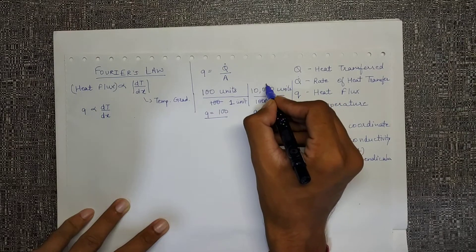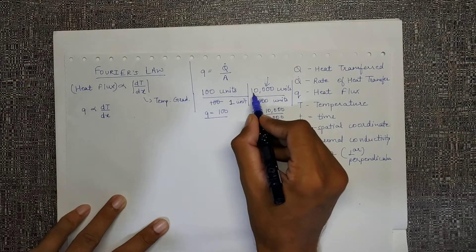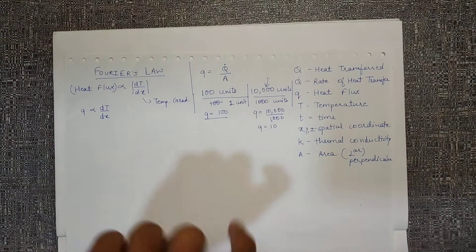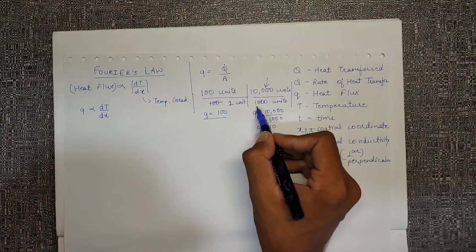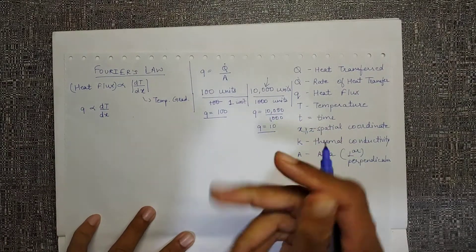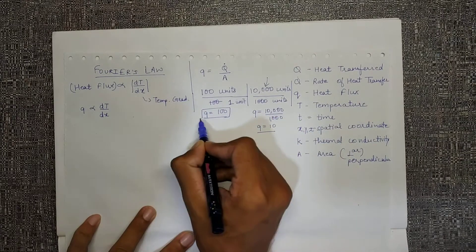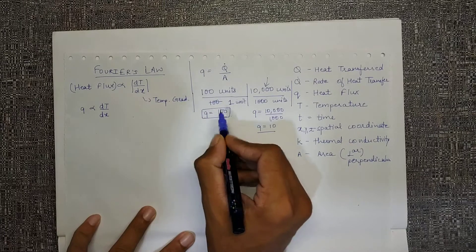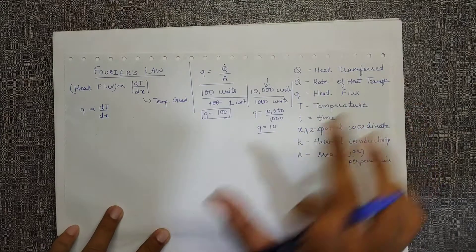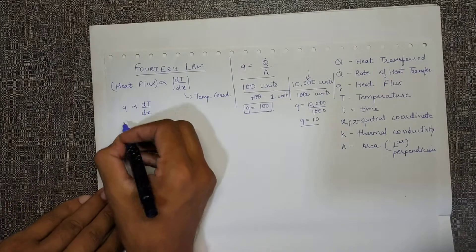So it may look like the rate of heat transfer is higher here because the quantity is larger, but that rate of heat transfer is happening from a larger area, that is 1000 units of area. So the heat flux or the strength of that rate of heat transfer is smaller compared to this case where we have q equal to 100. Basically, heat flux is a normalized kind of rate of heat transfer. We are normalizing it with respect to the area variable.